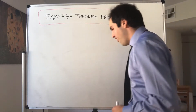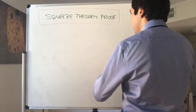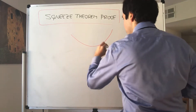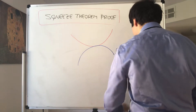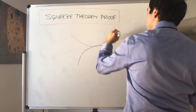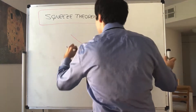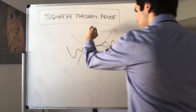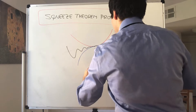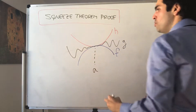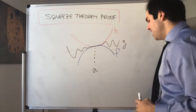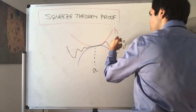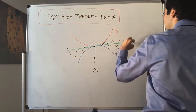And all it says is the following. Suppose you have a function g that's squeezed between f and h. So suppose this is f, this is h, and you have a function g in between the two. Then if the limit as x goes to a of f of x, the blue function, equals the limit as x goes to a of the red function h, then the limit as x goes to a of the middle function g is also l.